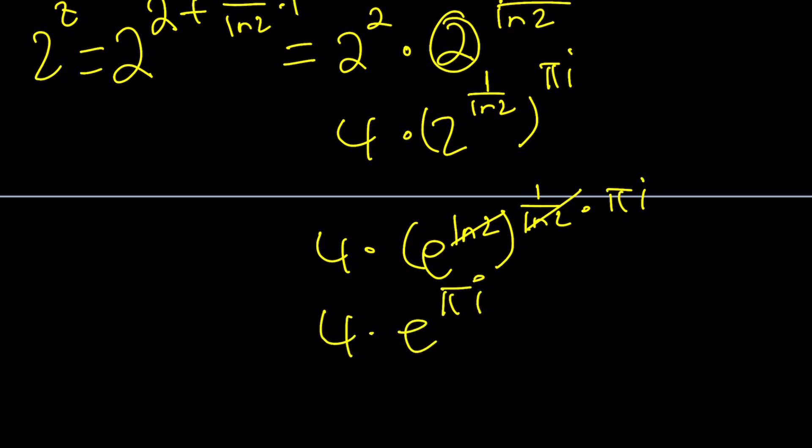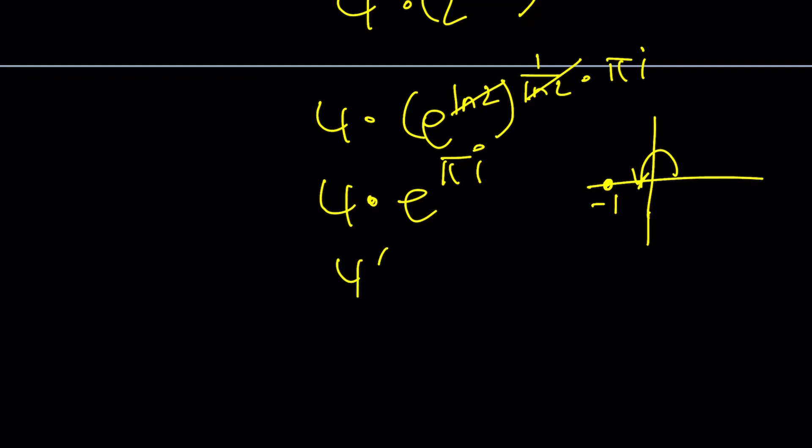Right? This is negative 1 because of pi radians. So this is just going to be 4 times negative 1 and the answer is going to be negative 4 which means our solution actually checks. All right?